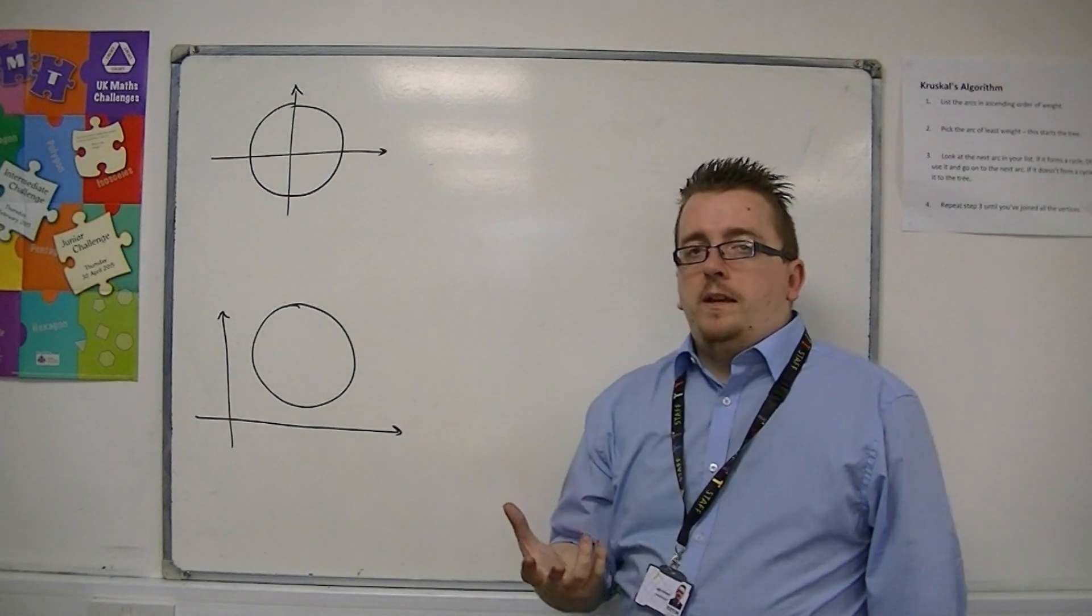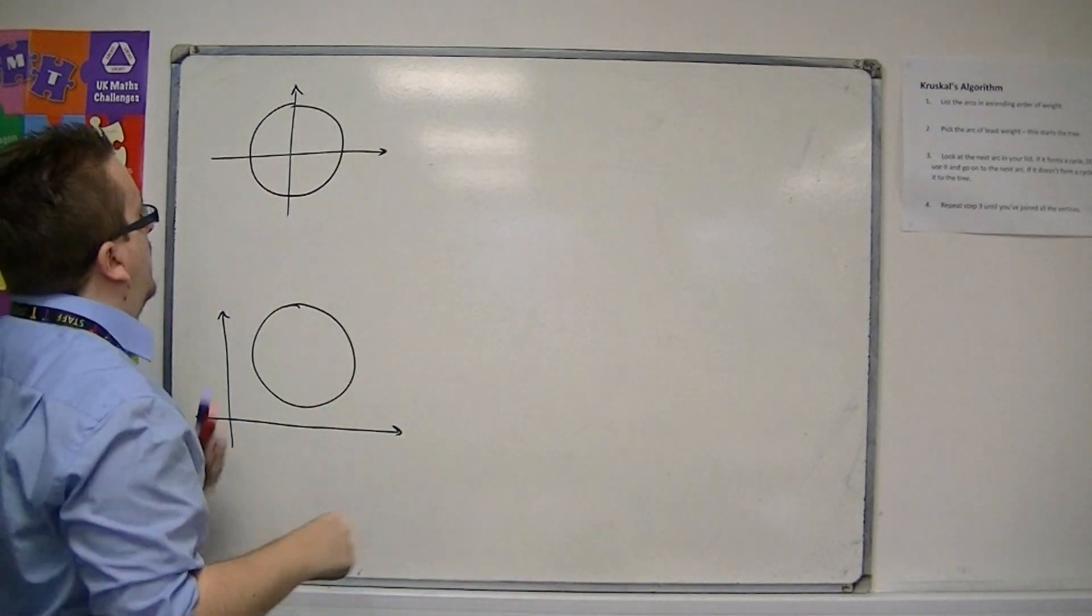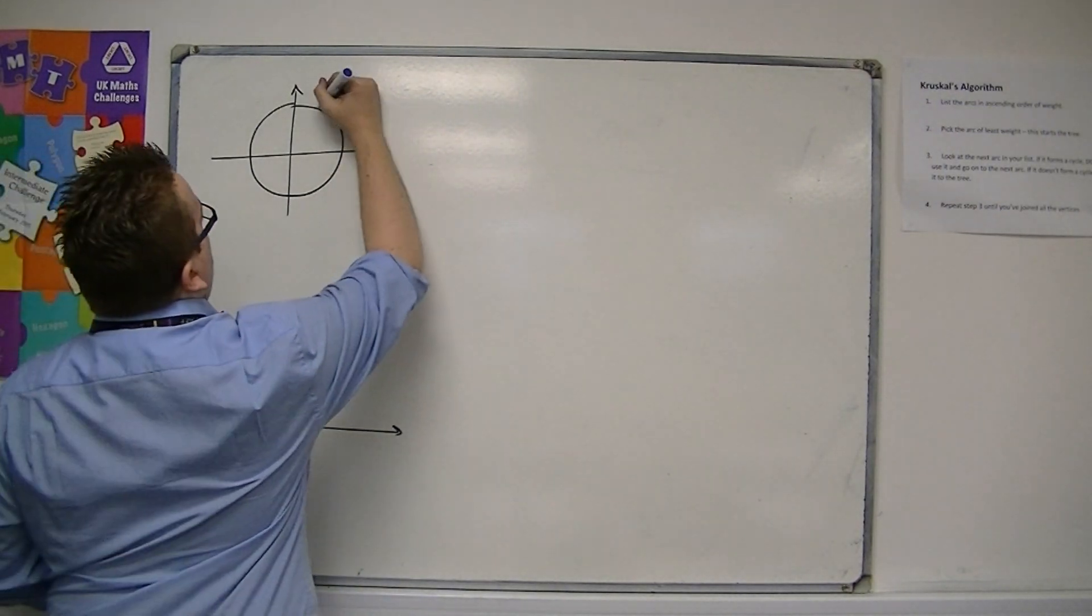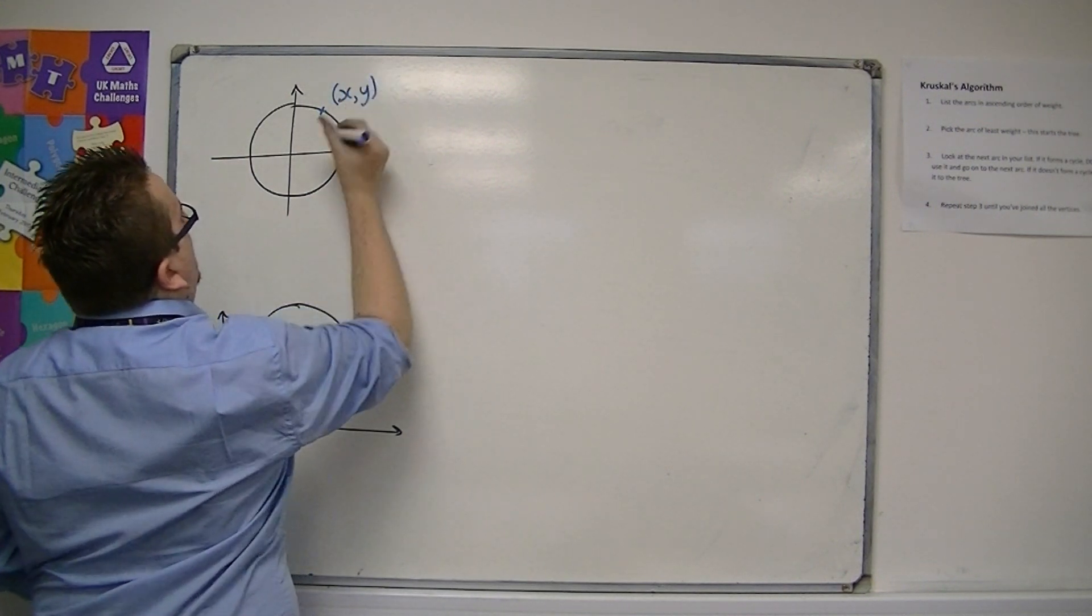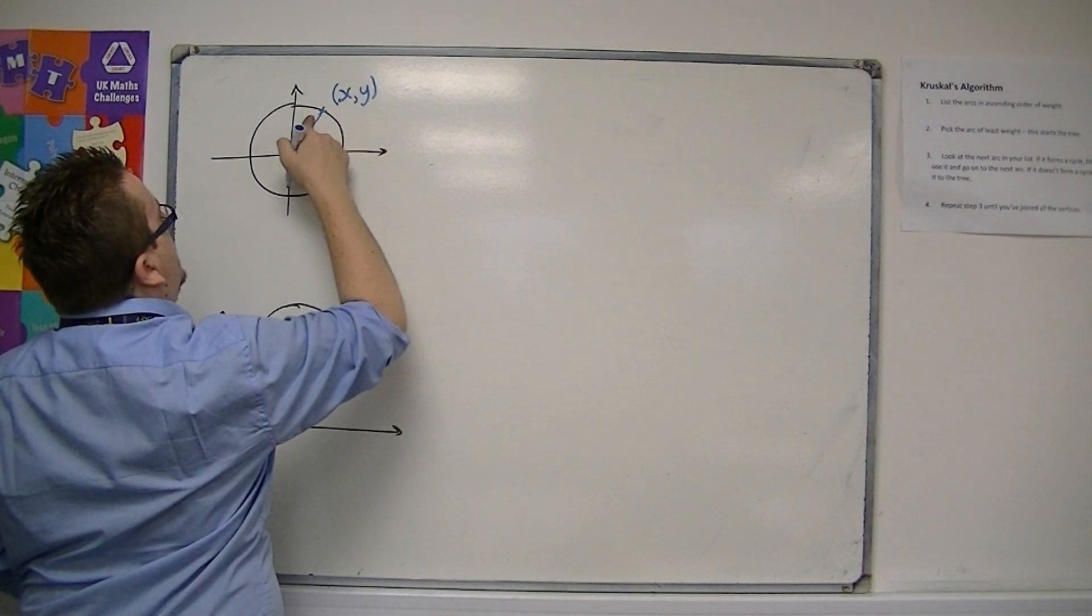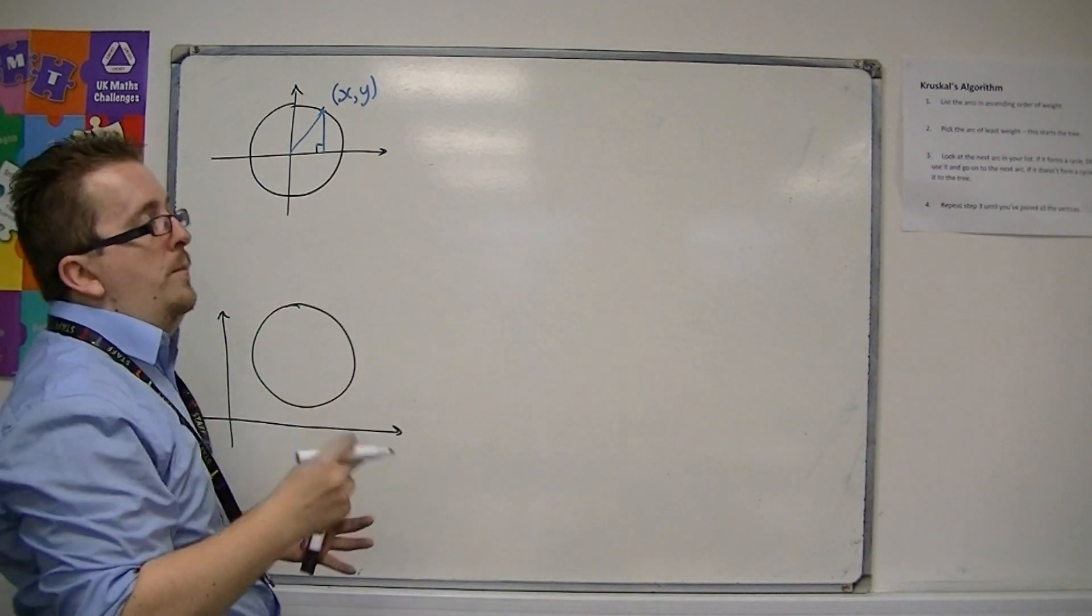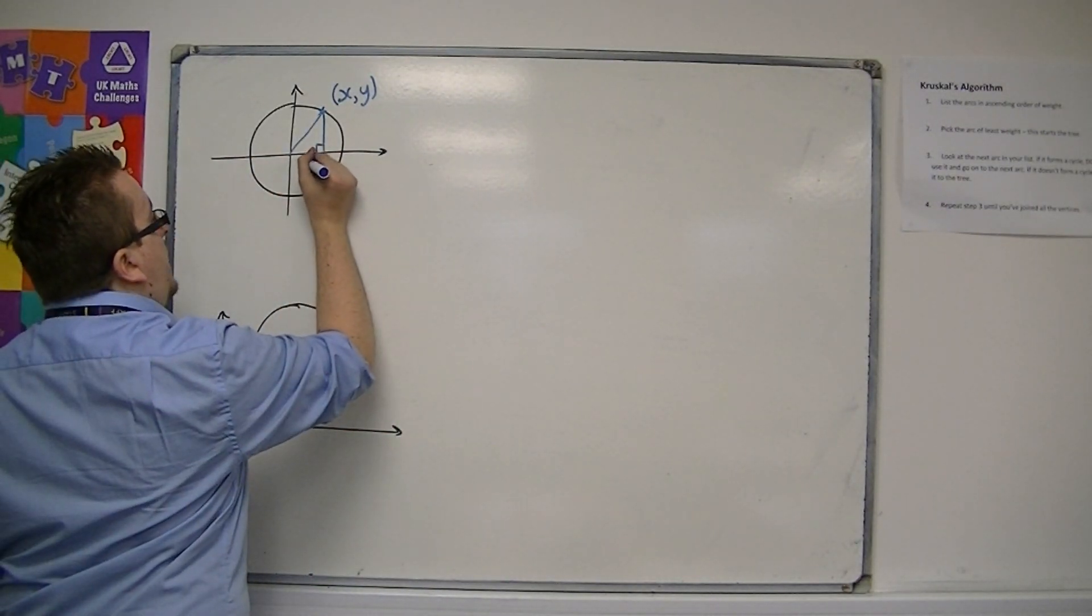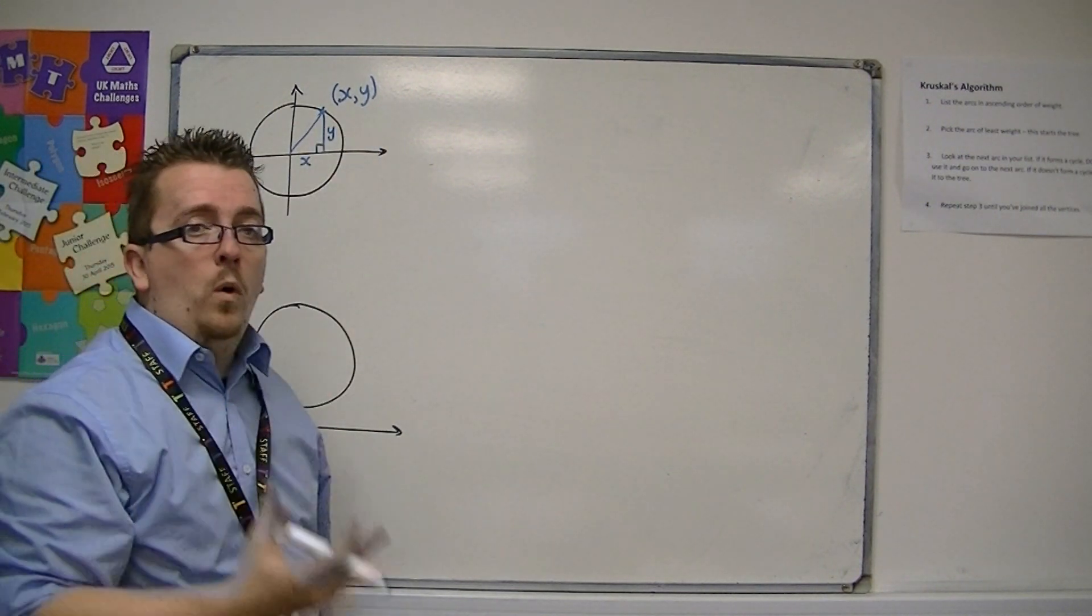If you think about a circle that is centered at the origin, centered at (0,0), then a point on the curve will have the coordinates (x,y). If I drew a right-angled triangle from the origin to that point, then the length of the base would be x, and the height of the triangle would be y.